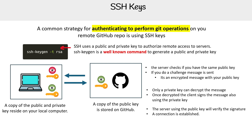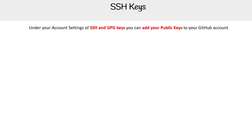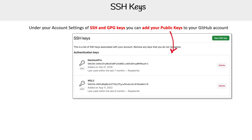This allows you to use SSH keys to git clone, push, or do things like that. Under your account settings, SSH and GPG keys is where you'll be able to add the public keys.